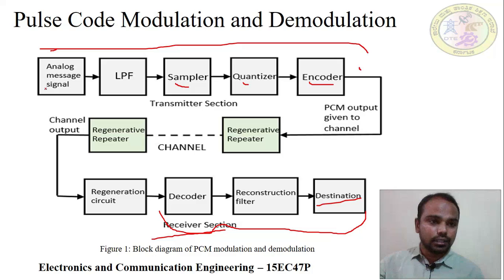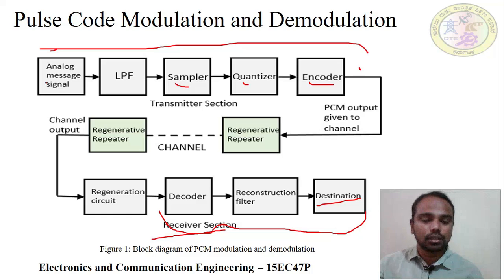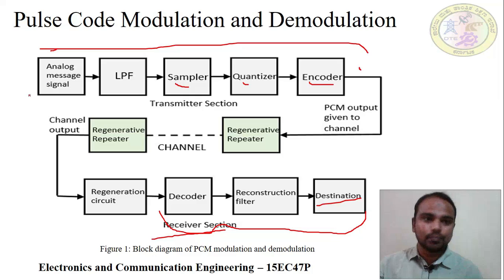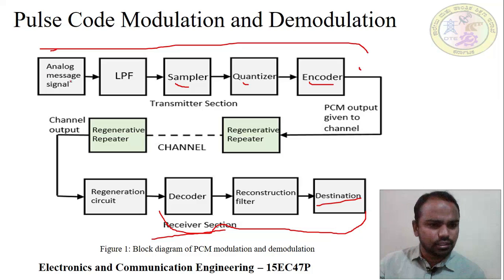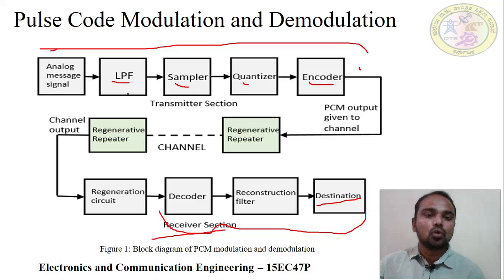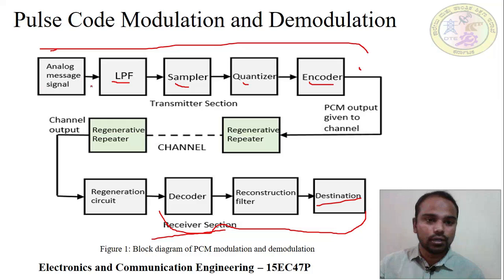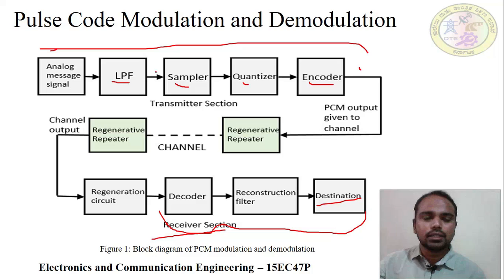Analog message signal is a signal which is continuously varying with respect to time — this is called analog signal. This analog message signal is first passed to the low pass filter. The low pass filter filters out the highest frequency components present in the analog message signal.